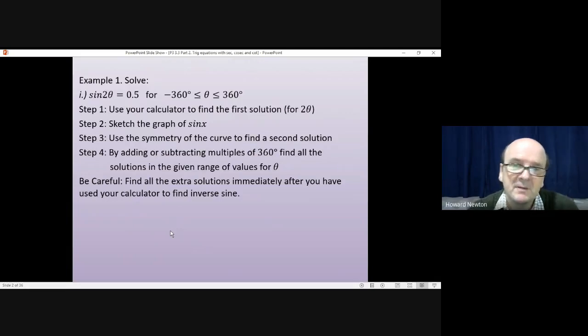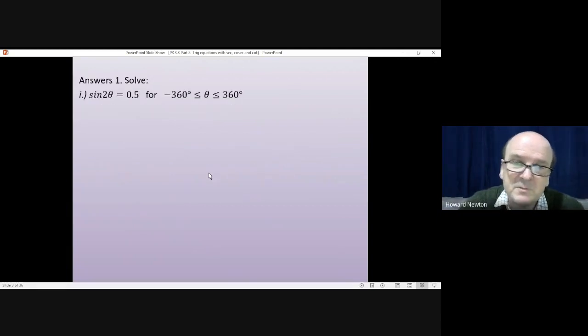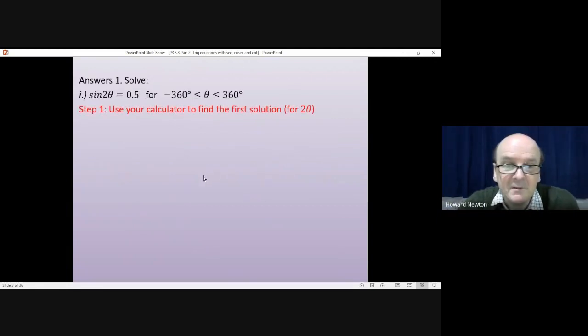Okay, we'll have a look at this together. So sine 2θ = 0.5 is what we're looking at. The first step was just to use our calculator. So we do inverse sine of 0.5 and when we do that we'll get 30 degrees for the answer. Be careful, it's 2θ we've got here. So 2θ could equal 30 degrees. We don't divide by 2 yet. We just leave it as 2θ could be 30 degrees.